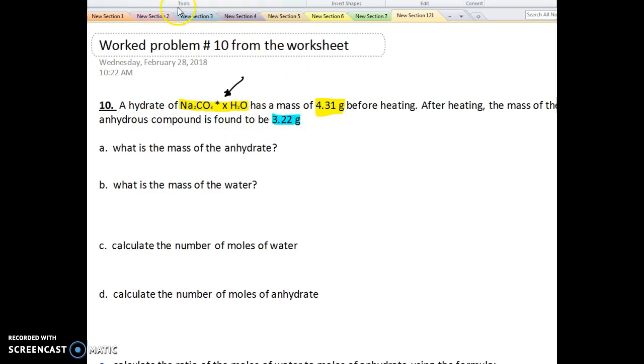So this, once again, is our anhydrate. We do need that value. So it asks right here in the first part, what is the mass of the anhydrate? Okay, well, that's just 3.22 grams. Okay, that was easy.